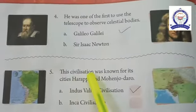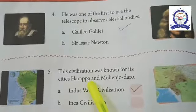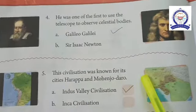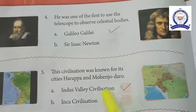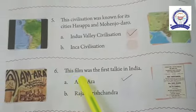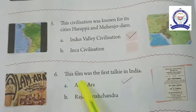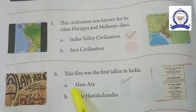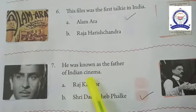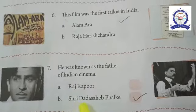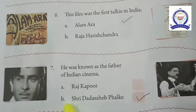Number five: this civilization was known for its cities Harappa and Mohenjo-daro — the answer is the Indus Valley Civilization. Number six: this film was the first talkie in India — the answer is option A, Alam Ara. Number seven: he was known as the father of Indian cinema — the answer is option B, Dadasaheb Phalke.